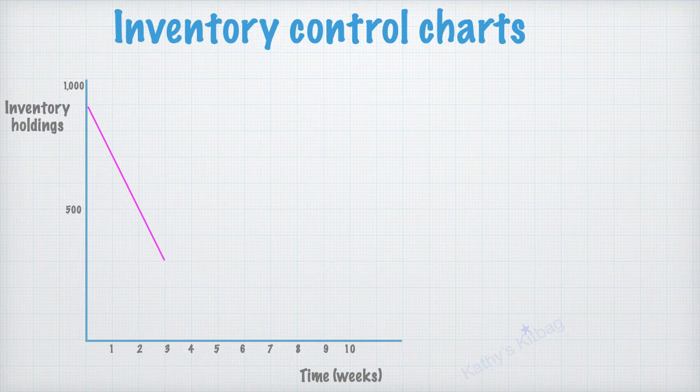So they're using up 600 units of stock. So if the business happened to be using stock a lot more quickly then the line would look steeper, something like that.